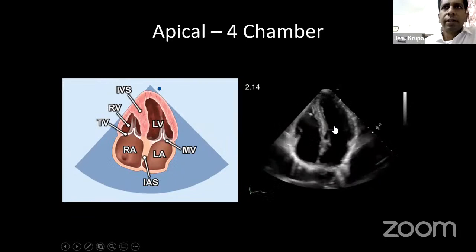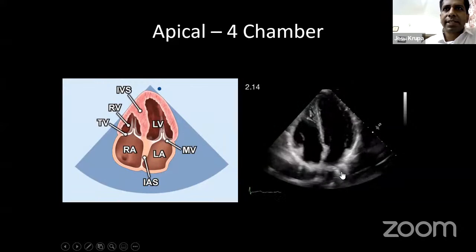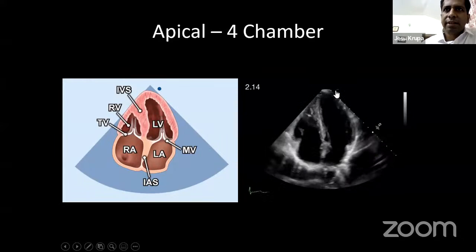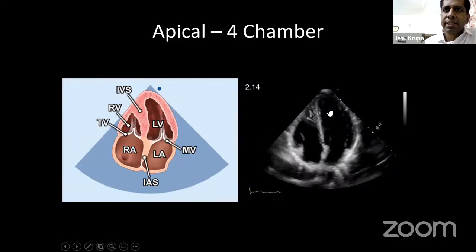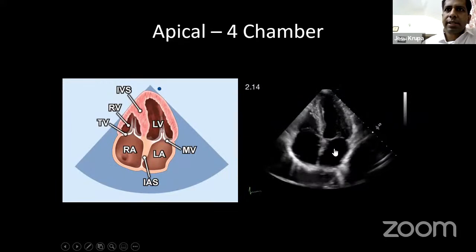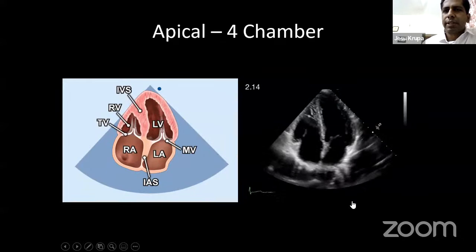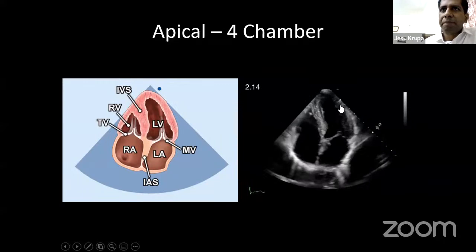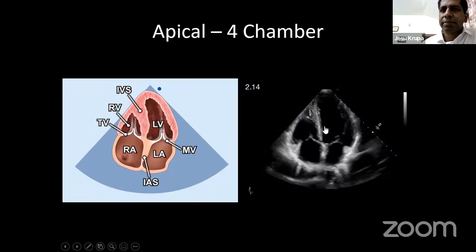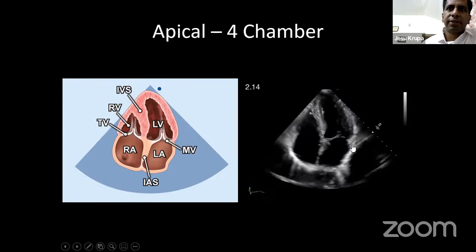The four-chamber view is intuitively the simplest to understand — you see the heart's four chambers, though it is upside down since the probe is at the LV apex. You see the left ventricle, mitral valve, left atrium emptying into the left ventricle, the interventricular septum partitioning the left and right ventricles, the interatrial septum partitioning the left and right atria, and the right atrium emptying into the right ventricle through the tricuspid valve. From this view you can identify LV dilatation, ventricular or atrial septal defects, and mitral stenosis.